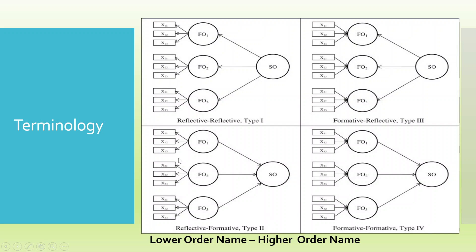In type 3, all the arrows are moving inside the construct at the lower order, making it formative, while the higher order arrows are moving out, making it reflective — so it is a formative-reflective model. In type 4, all the arrows in both the lower order and higher order are moving inside the construct, and therefore it is a formative-formative model.